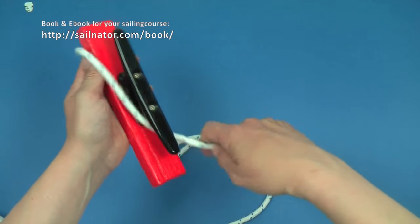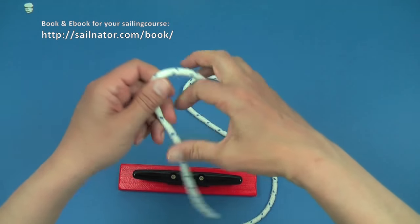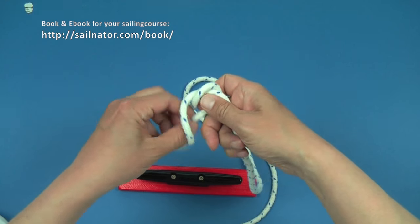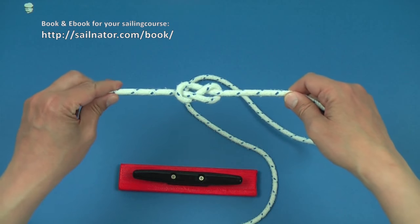Before I start, I again tie a figure 8 knot in the end of the line. It shall represent my boat that I want to cleat on a jetty.